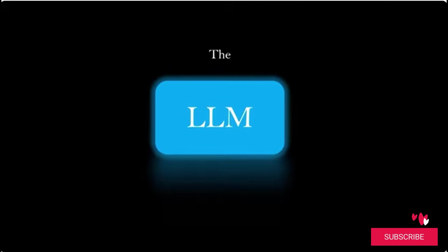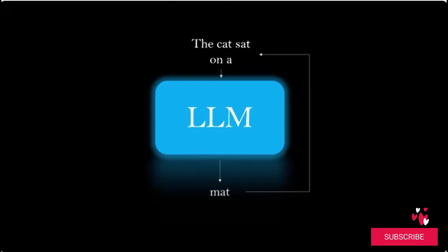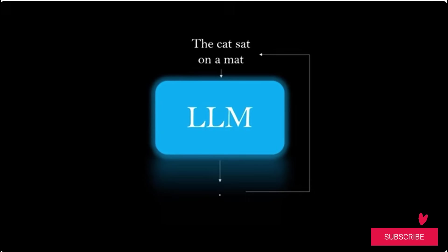For example, if you start with the word 'the,' the model predicts 'cat' and we append it to the context. Then with 'the cat,' the model predicts 'sat.' 'The cat sat,' the model predicts 'on.' By repeating this process, the model generates entire sentences, paragraphs, or even documents. This ability to understand context makes next word prediction so powerful — it's not just randomly guessing words, but predicting the most likely word based on the context of the sentence.